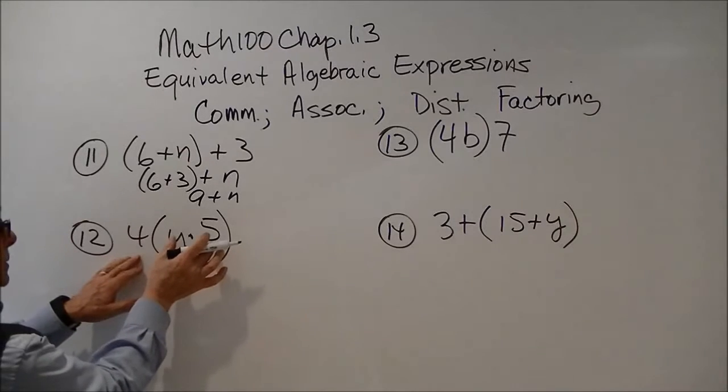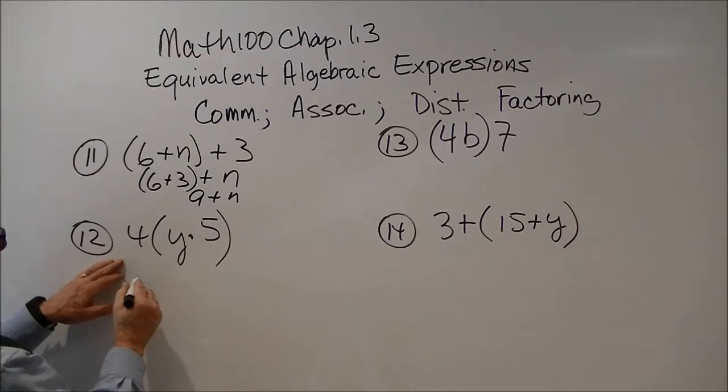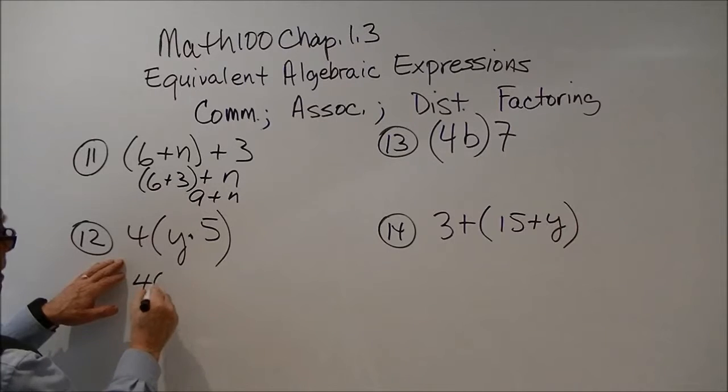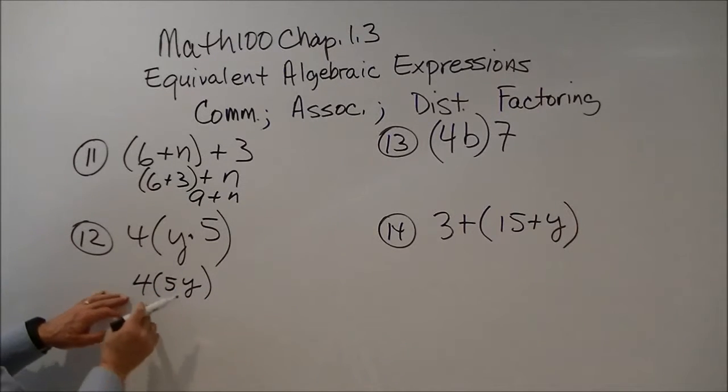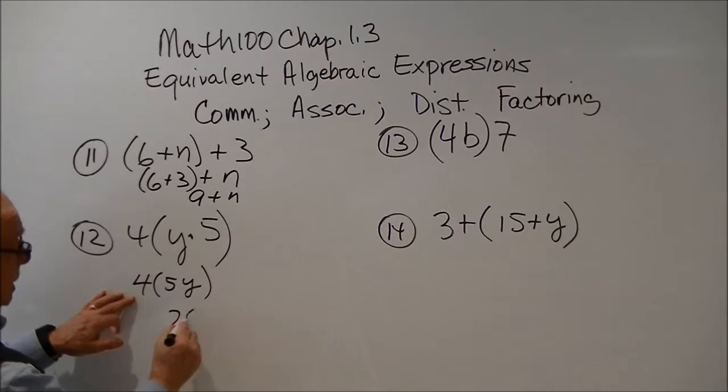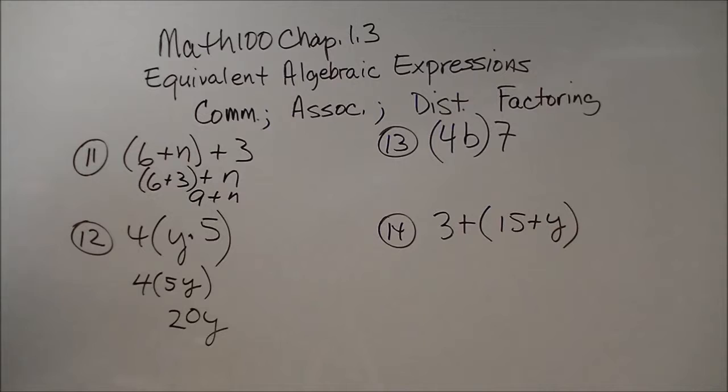And this one, you can switch these two around. So you'd end up with 4 times 5y. And then 5 and a 4 times 5 is 20y. Again, we're allowed to do that. We can switch these around. And then our 4 and 5 are together.